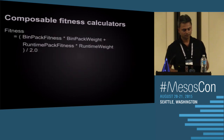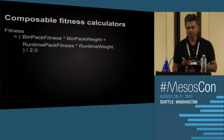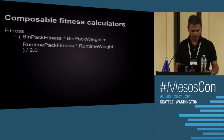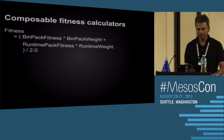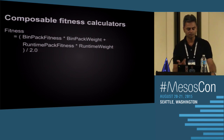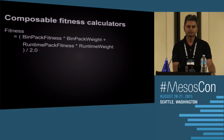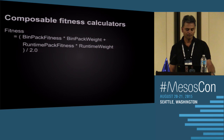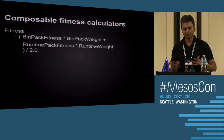You can combine different fitness calculators with different weights. For example, bin packing is important, but so is packing based on runtime types — keeping batch jobs together so those hosts can be shut down when jobs complete, since service jobs run forever. You can compose these and give weights to say one is more important than the other.